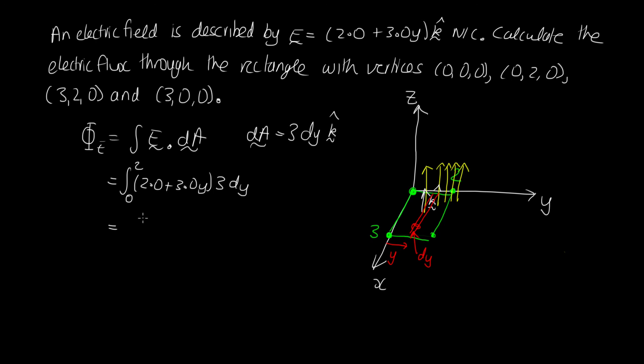So now we can integrate this. Let's pull the 3 out the front, and then we're integrating 2dy, which gives us 2y, plus 3y, which when we integrate, we get 3y squared over 2. And we're evaluating that at 0 and 2.